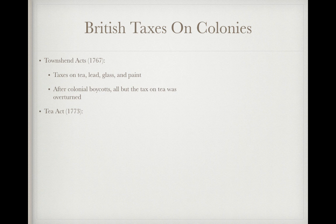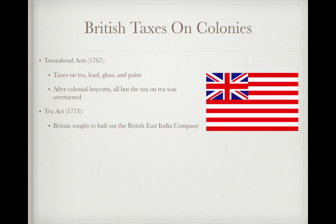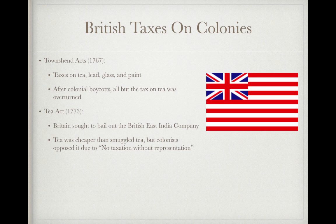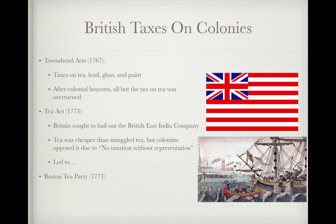The Tea Act of 1773 was passed by Britain to bail out the British East India Company. The cost of tea from the British East India Company was actually cheaper than smuggled tea, so colonists could buy it more cheaply, but they were against it because it was a tax. Colonists did not have representation in Parliament, so began the very famous quote: 'No taxation without representation.' This led to the Boston Tea Party that same year, when the Sons of Liberty — a group formed to protest British taxes — dressed as natives and threw the tea into Boston Harbor.